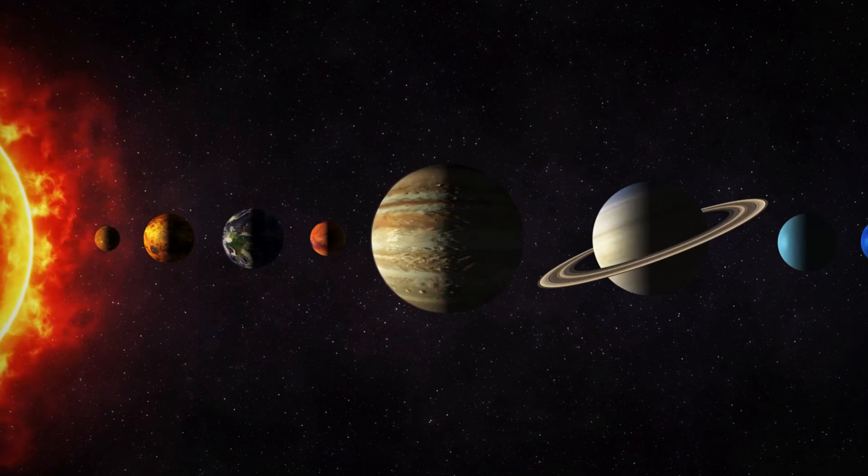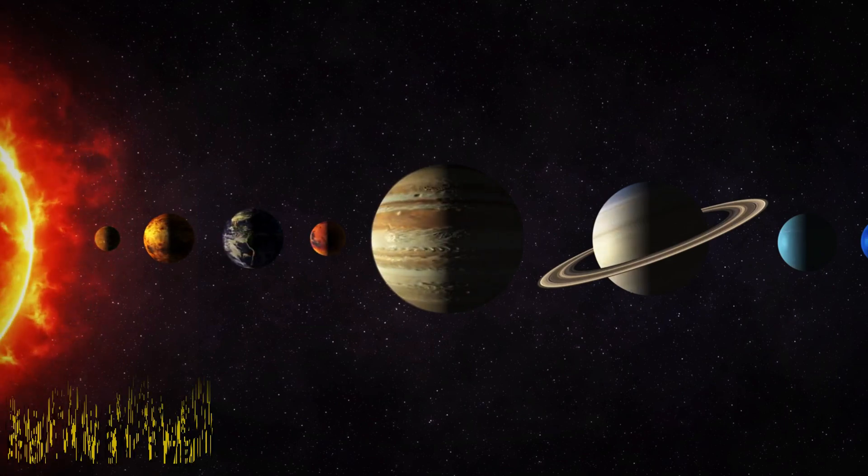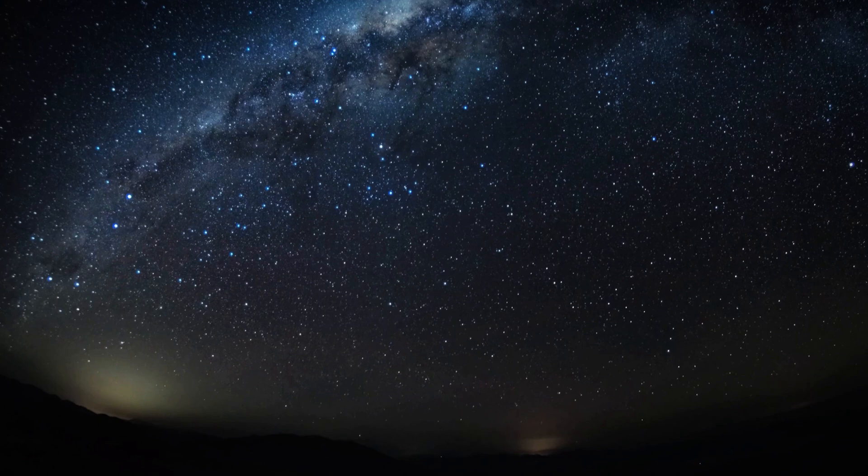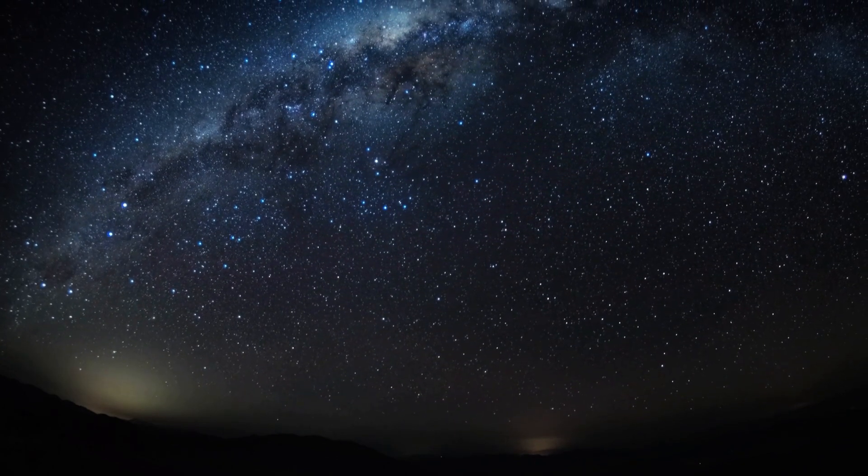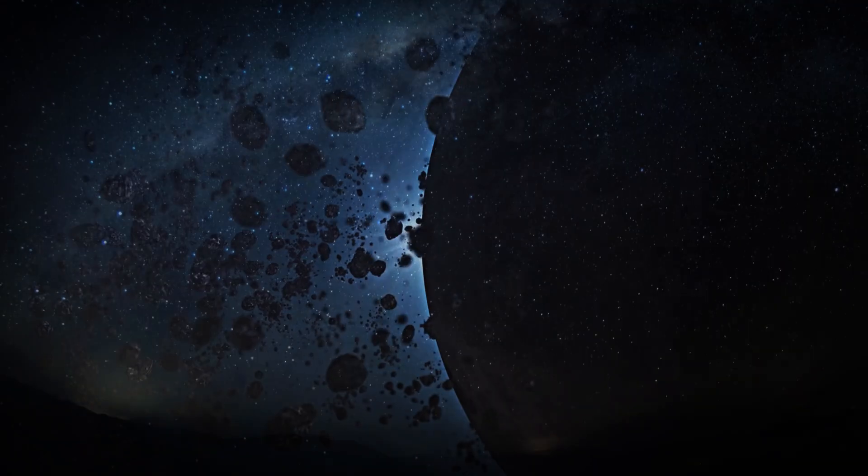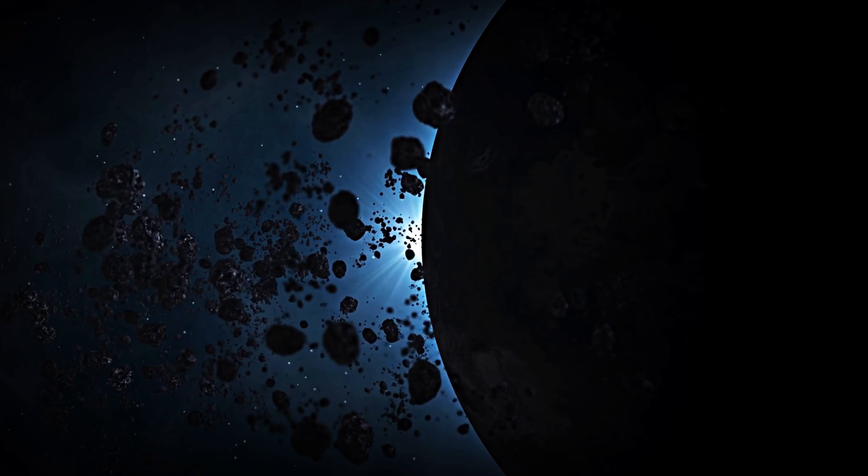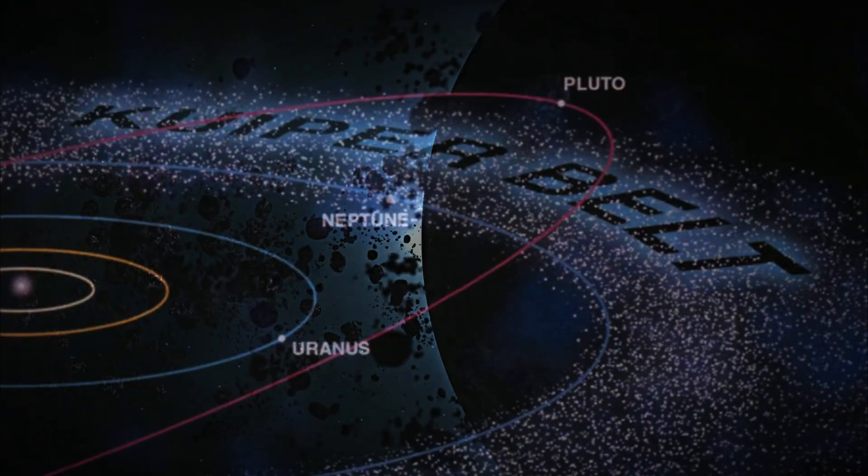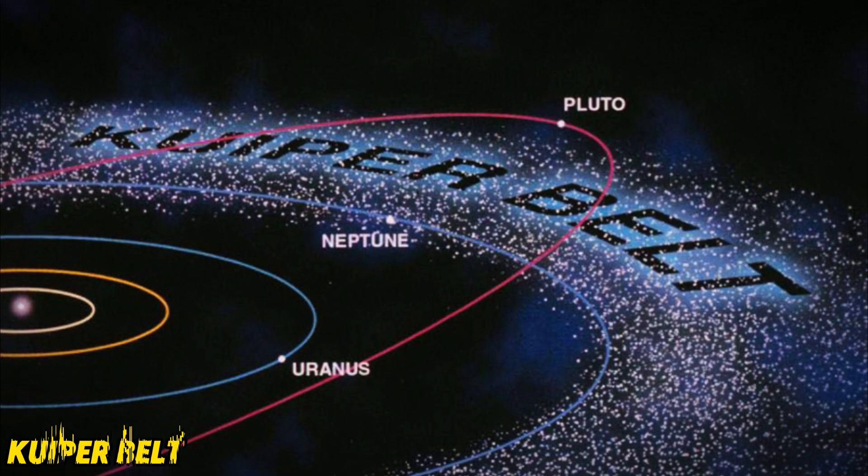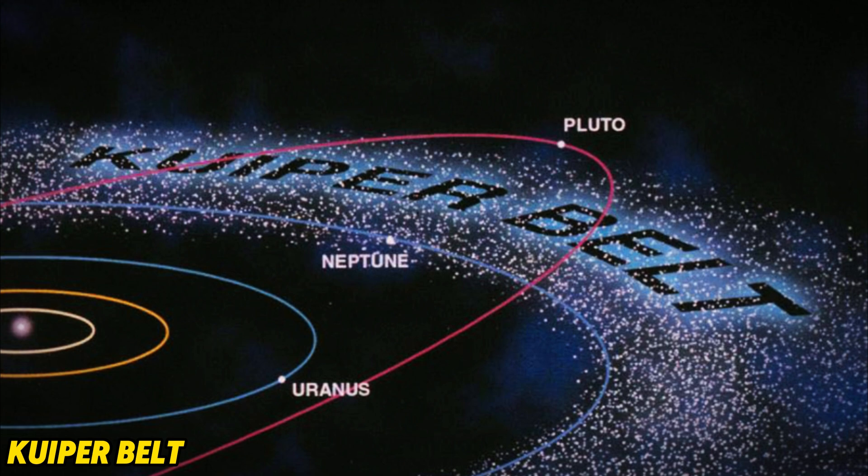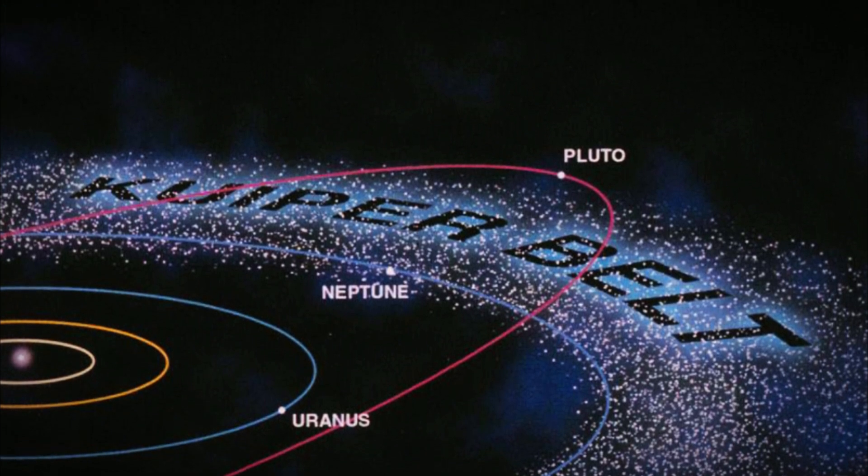Could there be an undiscovered planet lurking in the most distant corners of our solar system? Many astronomers increasingly believe that the elusive Planet 9 is real, and this isn't mere speculation. The peculiar anomalies in the Kuiper Belt strongly suggest the presence of a massive celestial body hiding in this region.